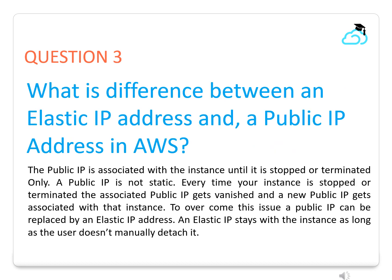Question 3. What is the difference between an elastic IP address and a public IP address in AWS? The public IP is associated with the instance until it is stopped or terminated only — a public IP is not static. Every time your instance is stopped or terminated, the associated public IP vanishes and a new public IP gets associated with that instance. To overcome this issue, a public IP can be replaced by an elastic IP address. An elastic IP stays with the instance as long as the user doesn't manually detach it.